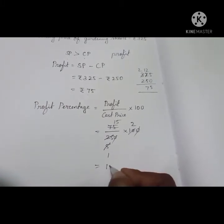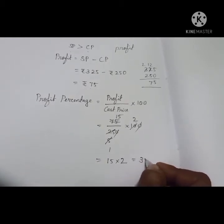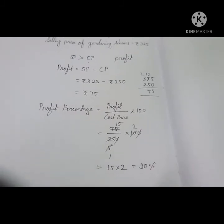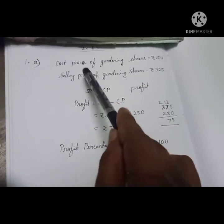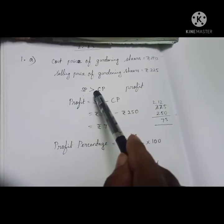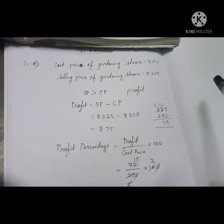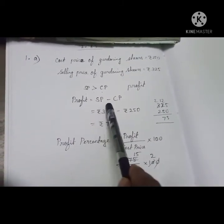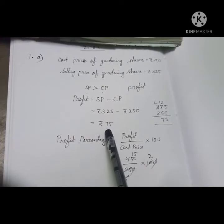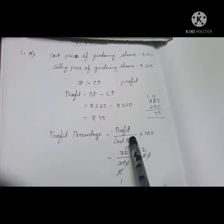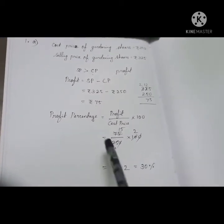That gives us 30 percent. So, to summarize: when cost price and selling price are given, compare both. If SP is greater than CP, there is profit. Profit equals SP minus CP. Profit percentage equals profit amount divided by cost price, multiplied by 100.